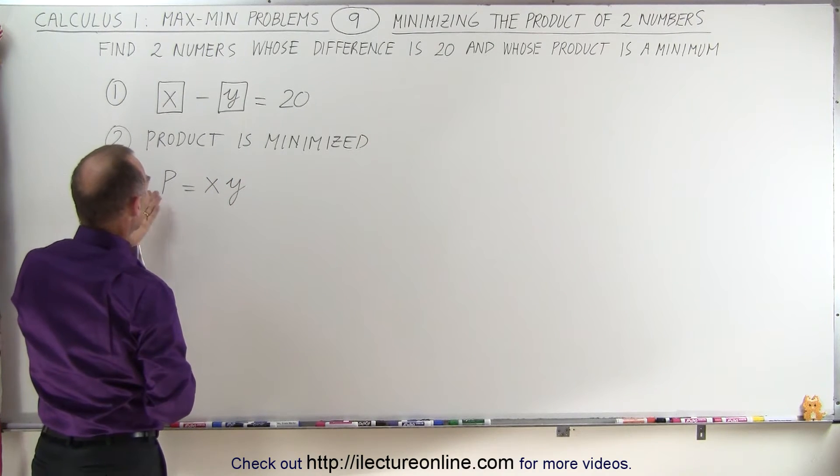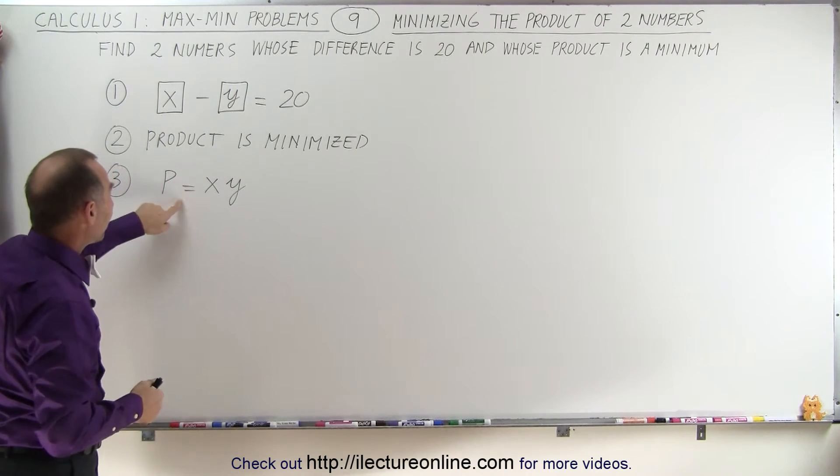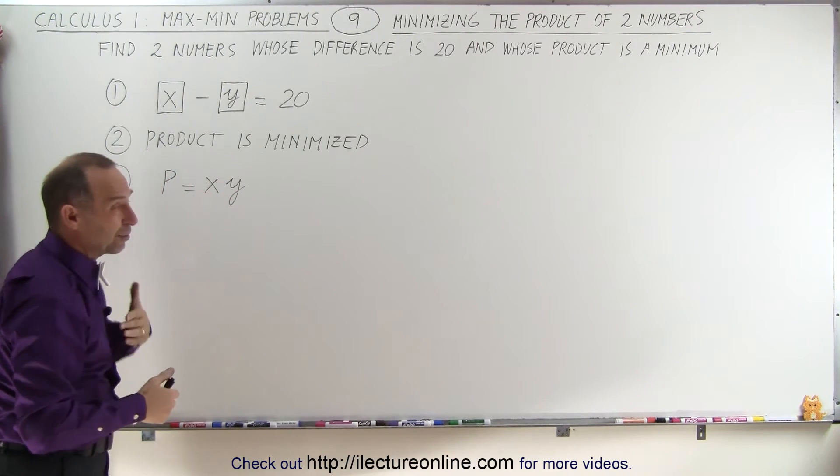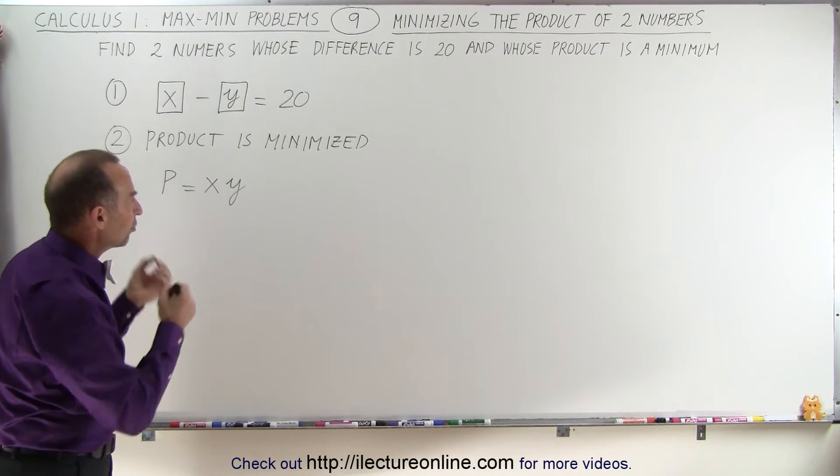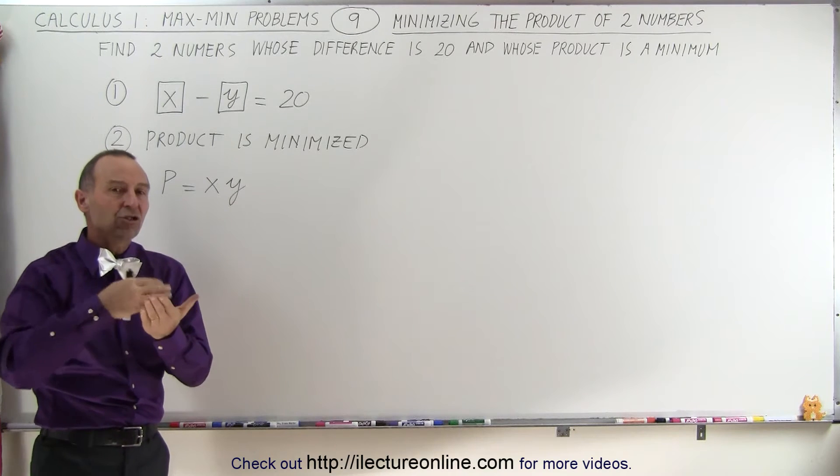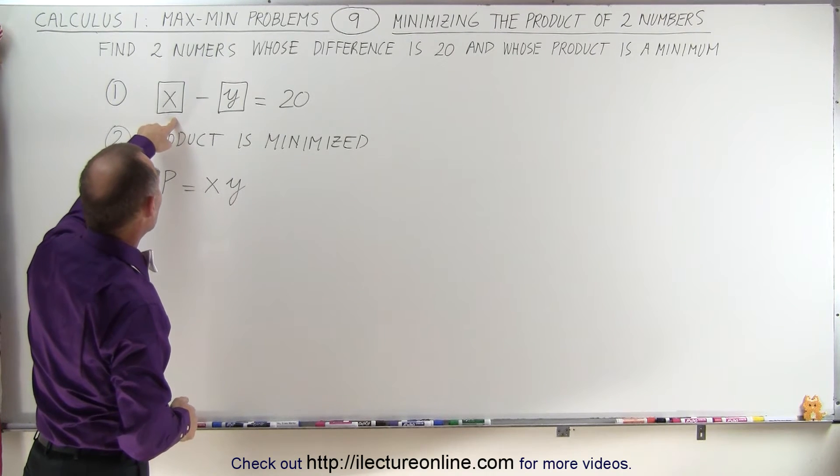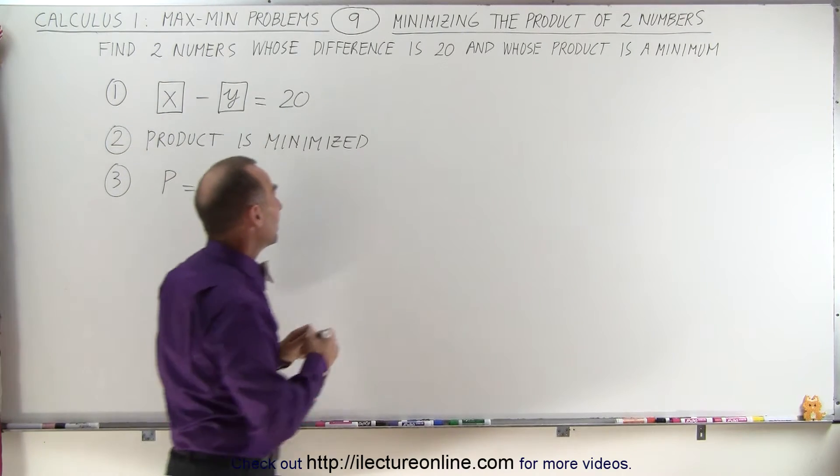And then we realize that the equation for the product, the item that we're trying to minimize, is a function of two variables, which means we're going to have to eliminate one of the two variables, which means we need a constraint. A constraint is usually a relationship between the unknown variables. And here we have a constraint, because the difference between them is equal to 20.